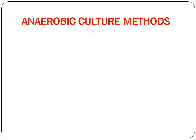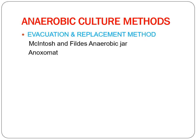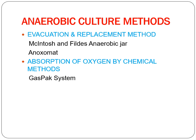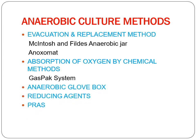Now comes the anaerobic culture methods. There are several approaches: first, the evacuation and replacement method — examples include the McIntosh & Fildes anaerobic jar and the Anoxomat — where total air is removed and replaced with an inert gas. Second, absorption of oxygen by chemical method — the gas pack system — where oxygen is removed by chemical reaction. Third, the anaerobic glove box, where samples are processed without exposure to oxygen. There are also reducing agents and PRAS (pre-reduced anaerobic sterilized) media.